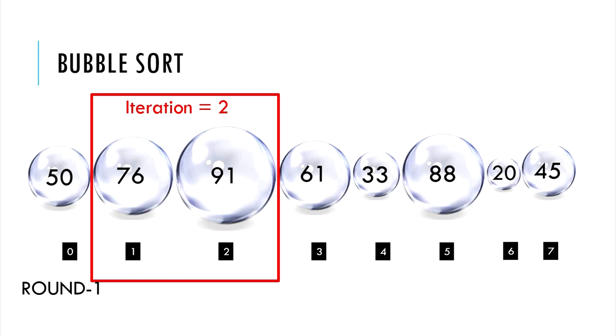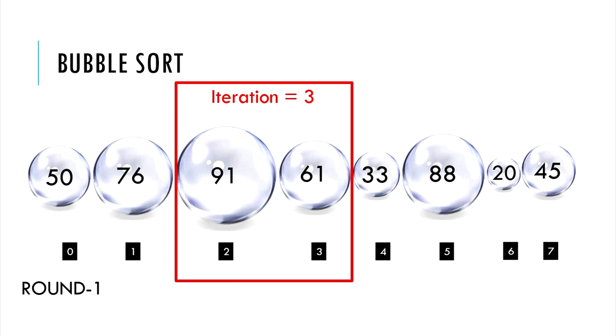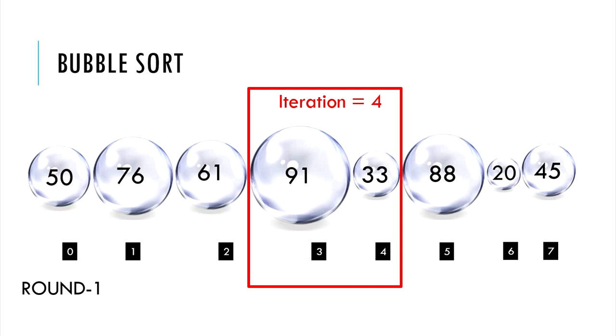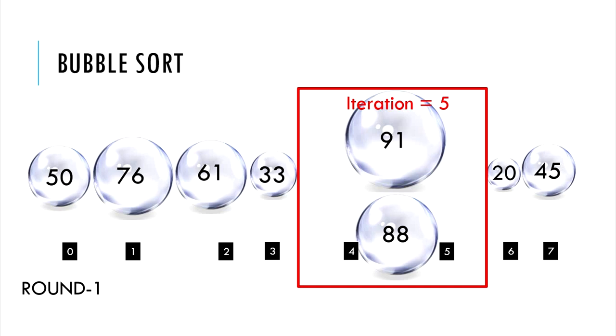Round 1 iteration 3. Element at index 2 greater than at index 3? Yes. Let's swap them. Round 1 iteration 4. Element at index 3 is greater than at 4. So let's swap. Iteration 5. Again, let's swap.